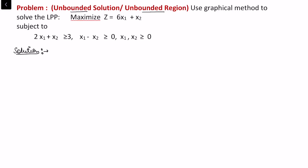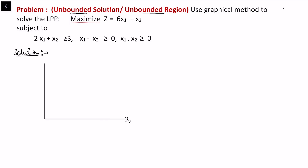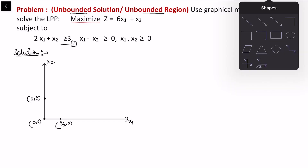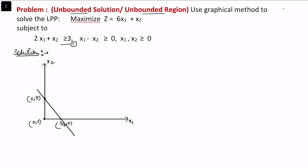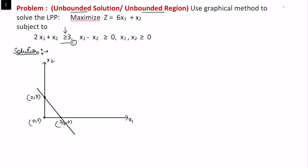Consider this problem. We are going to solve this linear programming problem with the graphical method. As usual, I will first draw the constraints. Let's take the x1 axis and x2 axis and draw the first constraint. If x1 equals 0, x2 is 3, giving point (0, 3). When x2 is 0, x1 is 3/2, giving point (3/2, 0). Joining these two points gives the first constraint line, and the region satisfying greater-than is upward.